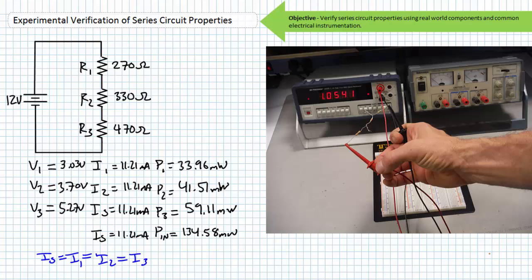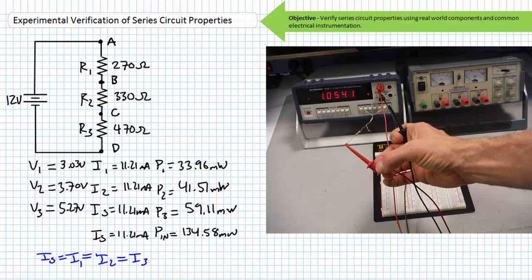A brief comment before we begin: this series circuit is not on the protoboard yet. If you build it correctly on the protoboard you should observe no change in total resistance. Call the left end of R1 node A; the right end connects to R2 only at node B; the right end of R2 connects to R3 only at node C; the right end of R3 is node D. There is no way current can travel other than from node A through R1 to B, through R2 to C, through R3 to D.